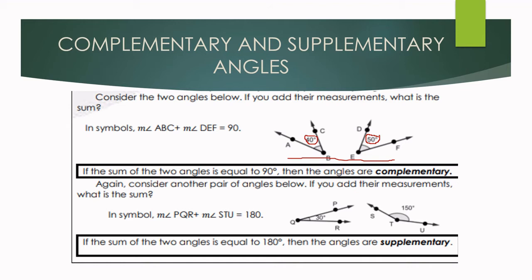In symbol, that is: measure of angle ABC plus the measure of angle DEF is equal to 90 degrees. Take note — if the sum of two angles is equal to 90 degrees, then the angles are complementary angles.